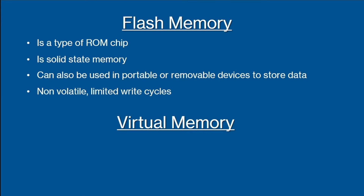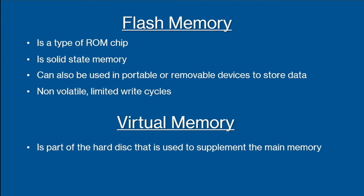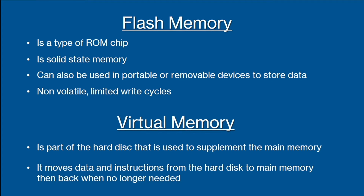The last type of primary storage that you need to know about is virtual memory. Virtual memory is the part of the hard disk that is used to supplement the main memory, so that when a computer doesn't have enough space in RAM, virtual memory acts as a temporary storage. It does this by moving data and instructions from the hard disk to main memory when no longer needed, but this can make a computer slow to respond.